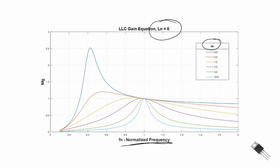Here's a set of curves for LN equal to 5. On here you can see we have a gain equation that will allow us to exceed the value of 1. Typically we want to be operating on this side of the curve to ensure we are in the inductive region, and that will help to maintain zero voltage switching. In order to maintain zero current switching, we're going to want to work at resonance, and our resonant frequency actually is going to change slightly due to the LLC configuration.